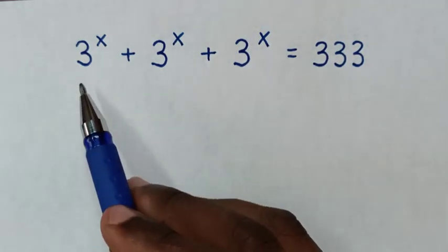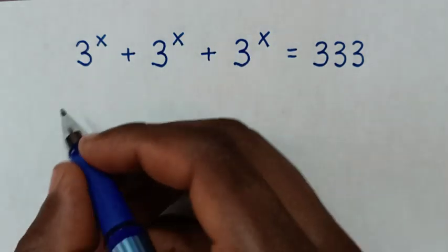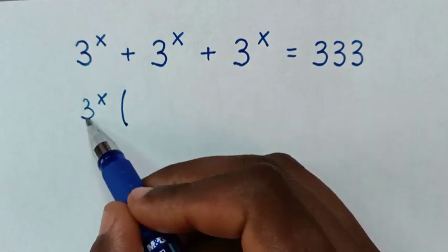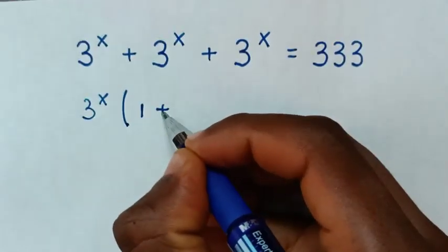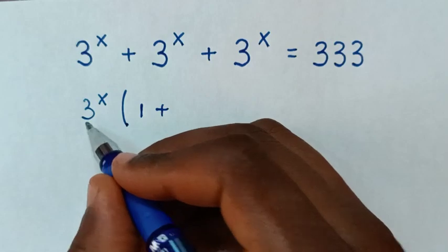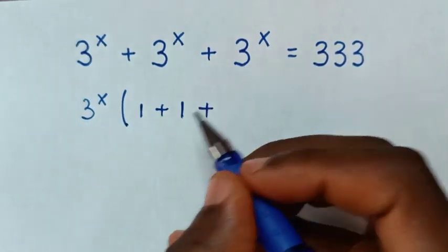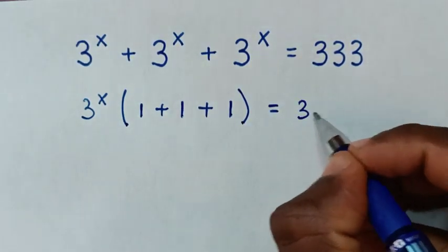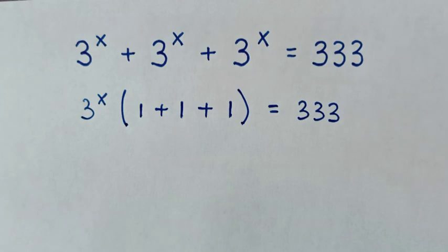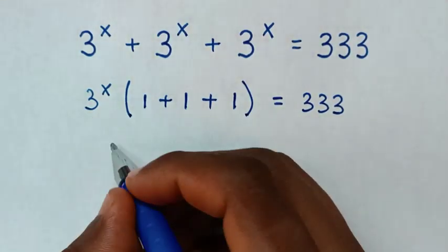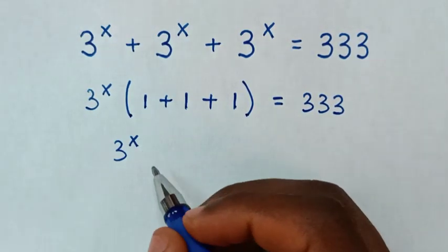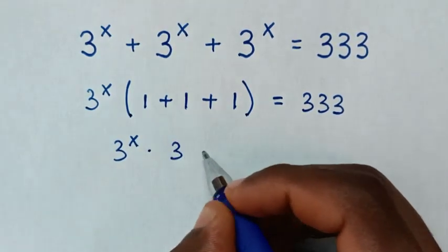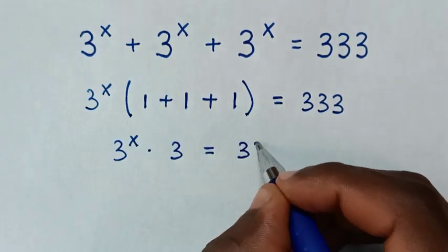So in here, 3 power x is common. We take 3 power x out of the bracket, then 3 power x divided by 3 power x is 1, plus 1, plus 1. So it will be 3 power x times 1 plus 1 plus 1, which is 3, is equal to 333.